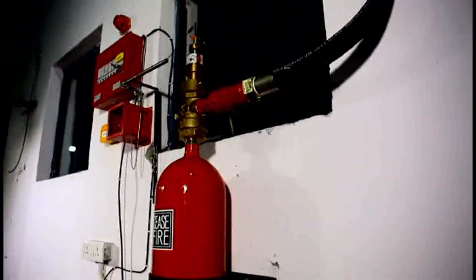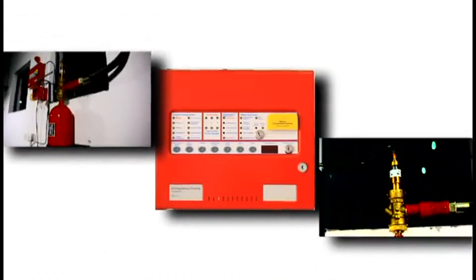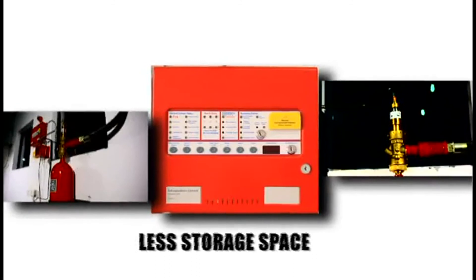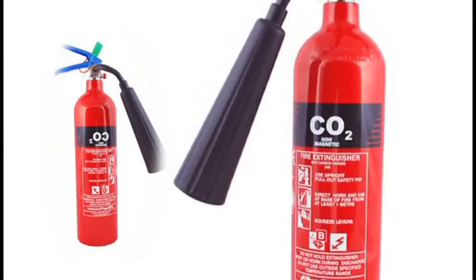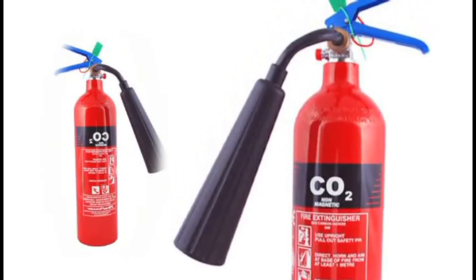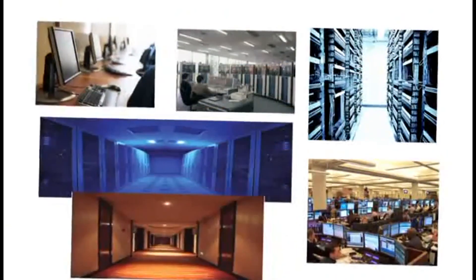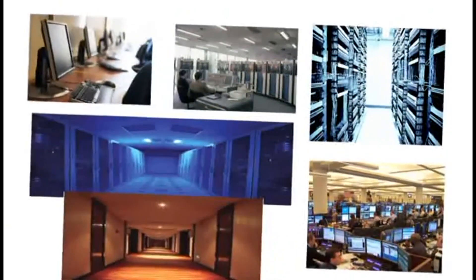What's more, FM 200 systems take up to 11 times less storage space than systems based on CO2 and inert gases, which can easily be changed to FM 200 systems. The FM 200 suppression system is a fire protection solution that protects all types of applications, making it the best way to protect the premises and keep it running.